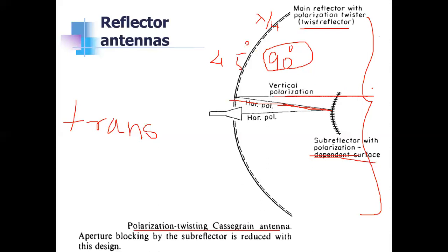The resulting vertically polarized component is perpendicular to the horizontal wire grid of the subreflector and passes straight through it. So the horizontally polarized waves from the feed are reflected by the subreflector, hit the twist reflector, become vertically polarized, and then pass through the subreflector without blockage. Hence this subreflector does not cause aperture blockage — that is the advantage of combining the twist reflector and the trans-reflector, eliminating the aperture blocking issue present in the standard Cassegrain design.